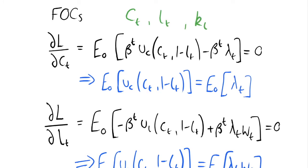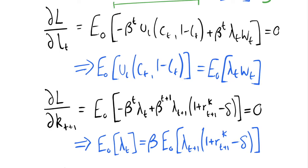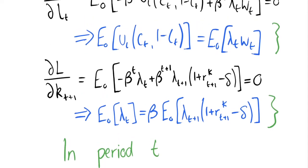We take first-order conditions with respect to our choice variables: consumption, labour, and capital in period T plus 1 — which we choose indirectly through investment, but it's still a choice variable. Our first-order condition with respect to consumption gives us an equation where the expected value of the Lagrange multiplier equals the expected value of the derivative of utility with respect to consumption. We also take a first-order condition with respect to labour and another with respect to the capital stock in period T plus 1.